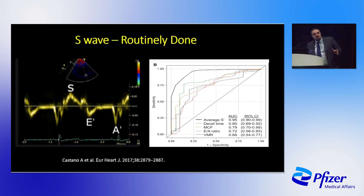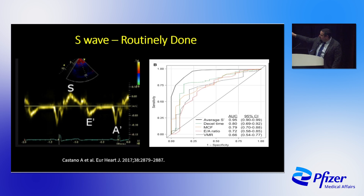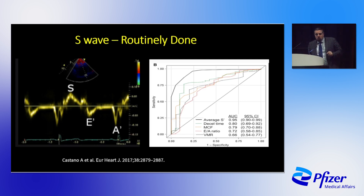The S-wave is extremely useful and very few people look at it — and you don't necessarily need strain imaging. Do the lateral base S-wave, which is the systolic wave timed with the QRS, not your E' or A'. This is a very good screening tool that equates to basal GLS. If it's less than about 6 cm/s, that's a red flag, especially if your EF is good. If your EF is 55-65% and the S-wave is low, you need to explain why.